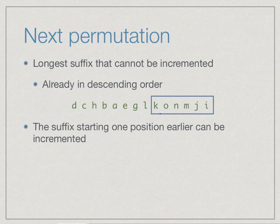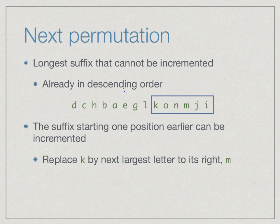Now, how do we increment this? We have to replace k by something bigger, and the something bigger has to be the smallest thing that we can replace it by. We will replace k by the next largest letter to its right, namely m. Among these letters, m, n, and o are bigger than k. If I replace it by j or i, I will get a smaller permutation. I may replace it by m, n, or o, but among these, since m is the smallest, I must start a sequence where the suffix begins with the letter m.